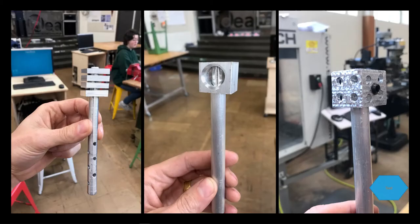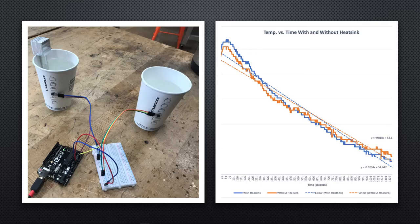Upon completion of a physical prototype, students move on to testing and evaluation. The client requested that the prototype be at least 10% more effective at cooling a hot drink relative to a control cup with no heat sink. Students gathered this data by applying computer science skills to build and program a microcontroller circuit. The data gathered by this device is analyzed in Excel and included in a final report.